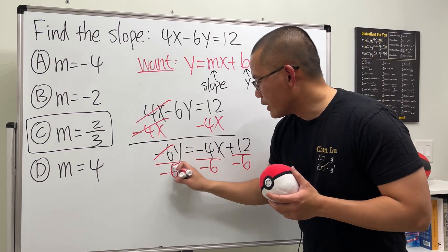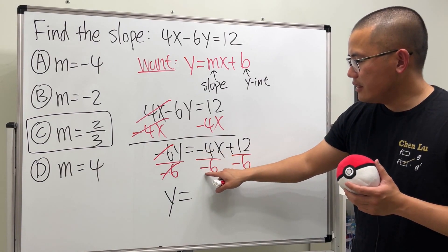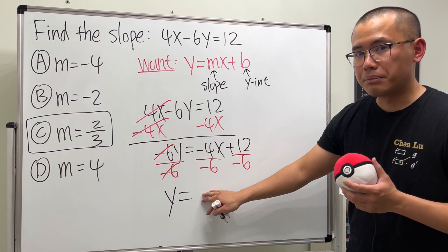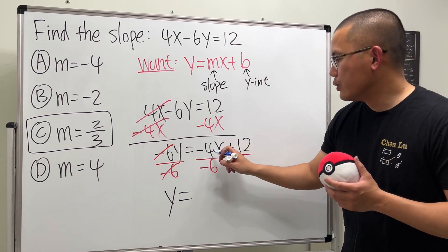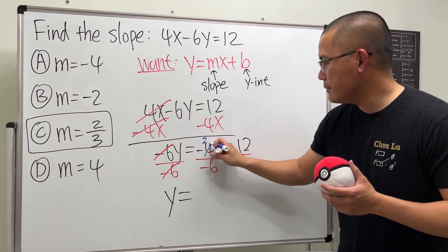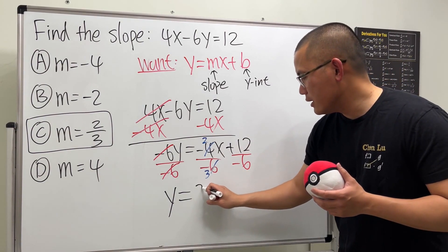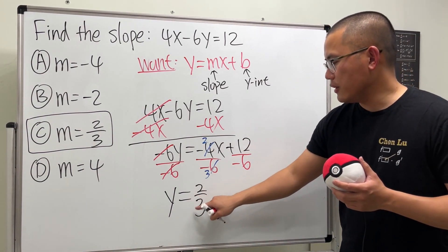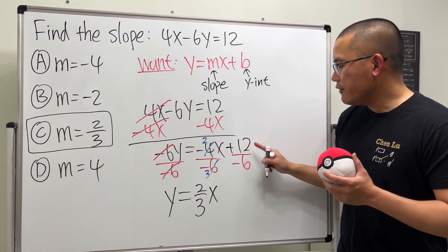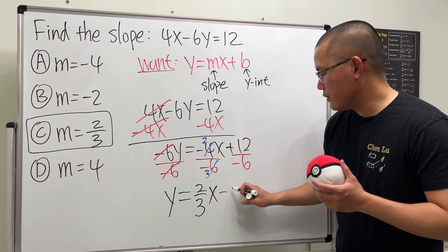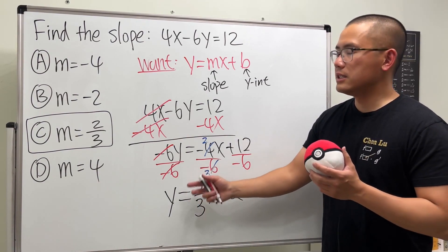This and that will cancel and we will have the y by itself. And this is equal to - negative negative when we divide we get positive - and 6 and 4 right here we can reduce with a 2. Right, 2 goes into 4 two times and 2 goes into 6 three times. So in fact we have 2 over 3. Write the fraction in front of the x like this, and then we have the x just right next to it. And then 12 divided by negative 6 is negative 2. And as you can see, the number in front of the x, once we are in the slope intercept form...